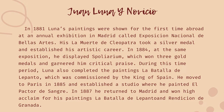Historical Context: Juan Luna y Novicio. In 1881, Luna's paintings were shown for the first time abroad at an annual exhibition in Madrid called Exposición Nacional de Bellas Artes. His La Muerte de Cleopatra took a silver medal and established his artistic career. In 1884, at the same exposition, he displayed Spolarium, which won three gold medals and garnered him critical praise. Luna also completed La Batalla de Lepanto, commissioned by the King of Spain. He moved to Paris in 1885 and painted El Pacto de Sangre. In 1887, he returned to Madrid and won high acclaim for La Batalla de Lepanto and Rendición de Granada.